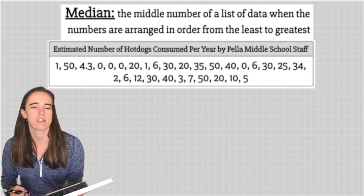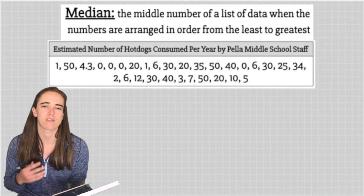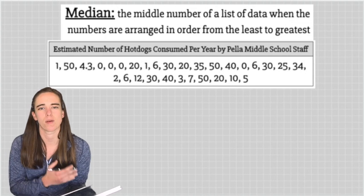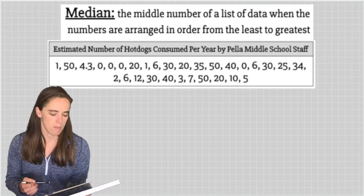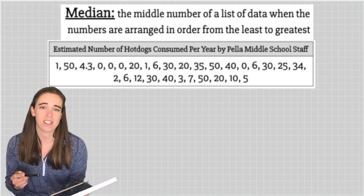The median is a measure of central tendency used to find the piece of data that's found right in the middle when you order the numbers from least to greatest. This data set right now is not in order from least to greatest, but we'll get it in order so that it's easier to work with.